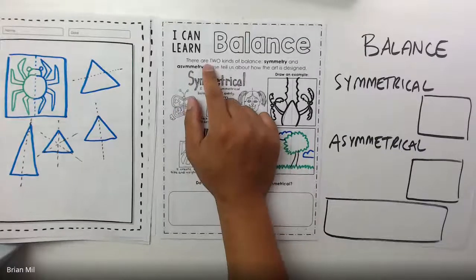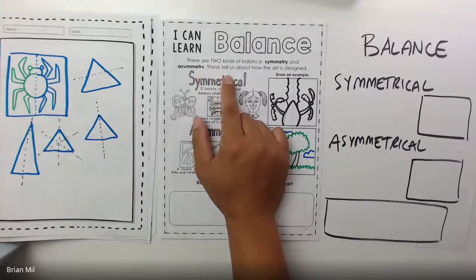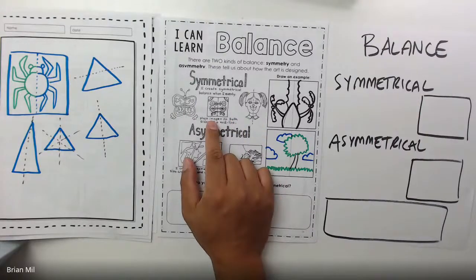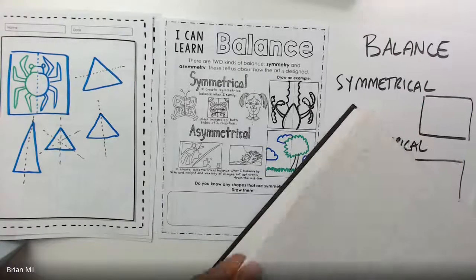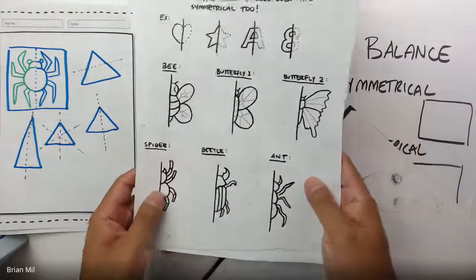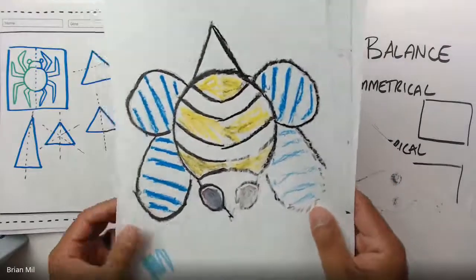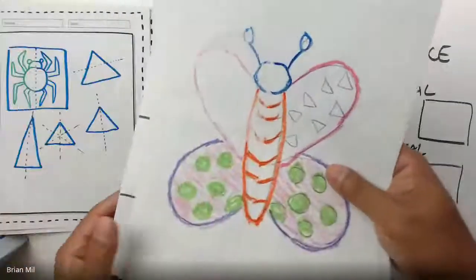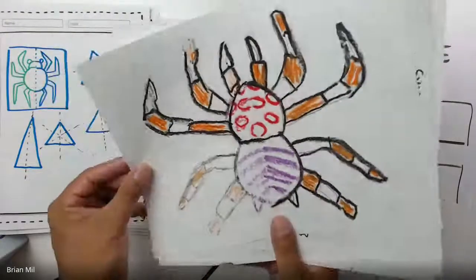Let's read the directions first: there are two kinds of balance — symmetry and asymmetry. These tell us how the art is designed or laid out. We did some of these examples last year. Raise your hand if you remember the symmetry bug project. Here it is — bugs like lady bugs, spiders, butterflies. These are all examples of symmetry because the design is mirrored on the other side. Bugs are a great example of symmetry.